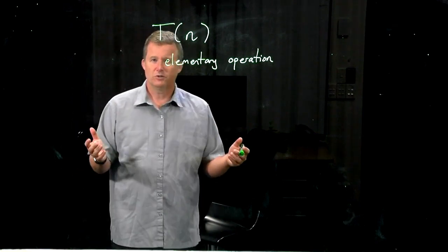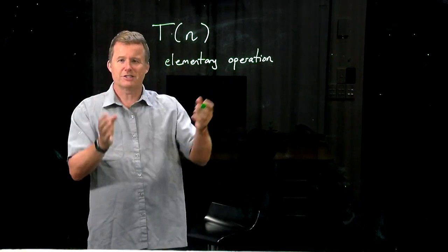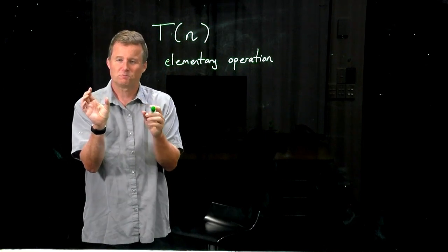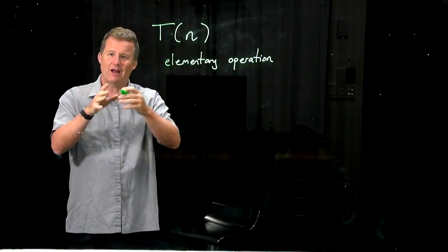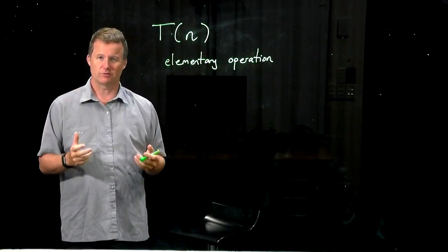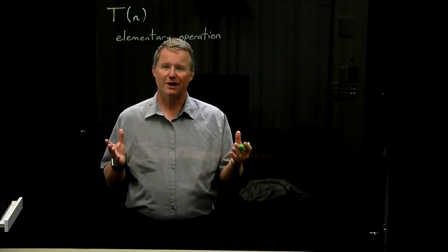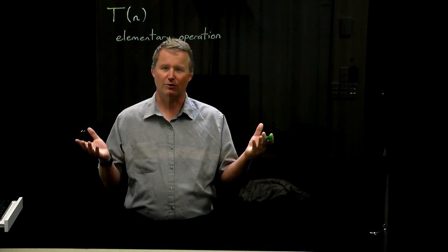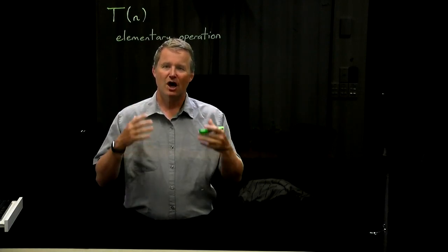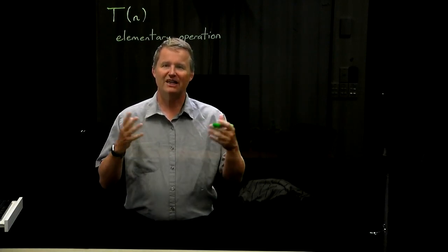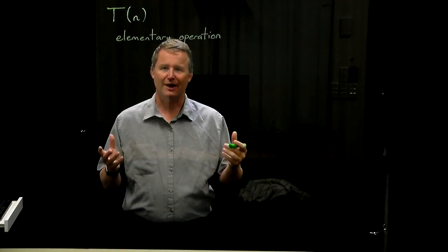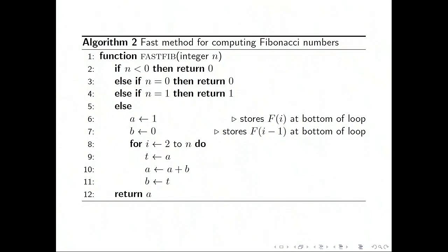So what we're going to do is use elementary operations as our basic measuring stick to determine how long an algorithm takes to run. So thinking back to last time when we talked about Fibonacci numbers and the FAST algorithm that I presented for that, I said that that algorithm ran in linear time. What do we mean by that?